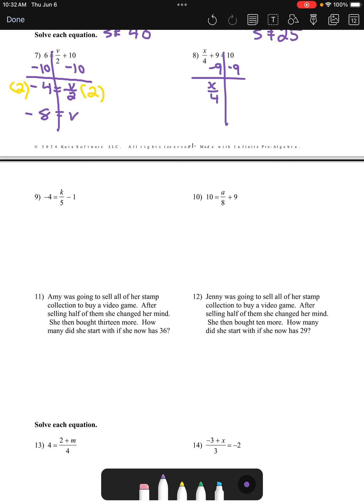In number eight, our first step is to remove the positive 9, leaving the x over 4 by itself. 10 minus 9 is of course 1. Our second step is to multiply both sides by the 4 so that we can undo the divide by 4, and that gets us a final answer of x equals 4.